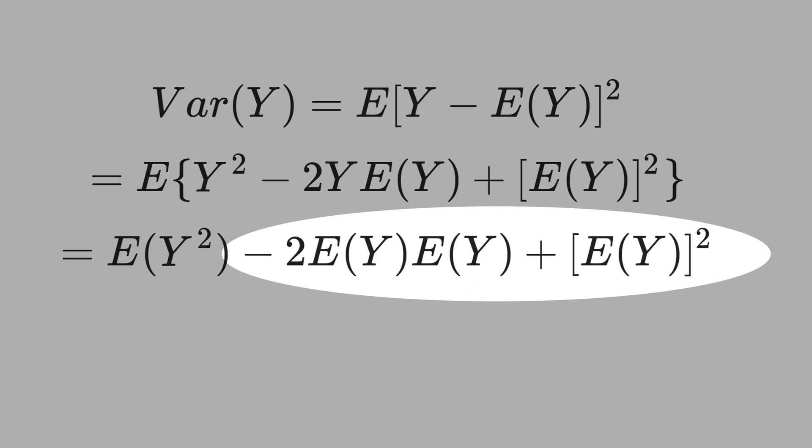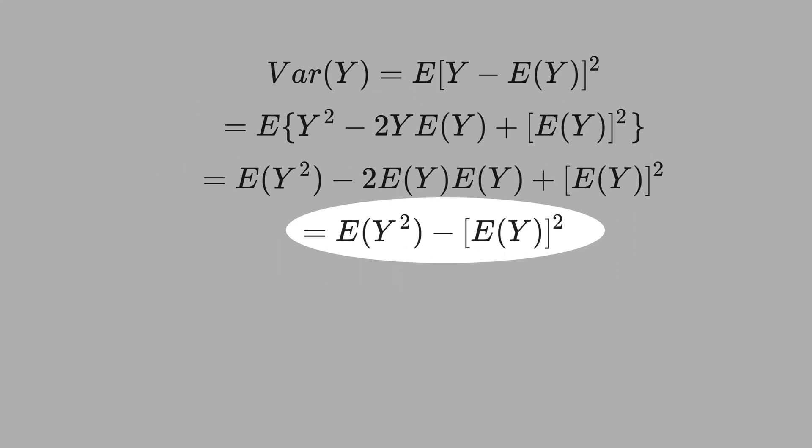Note that we can compress these two terms. Expectation of Y times expectation of Y is the expectation of Y power 2. Let's simplify these two terms. Here is another way of writing the formula for the variance.